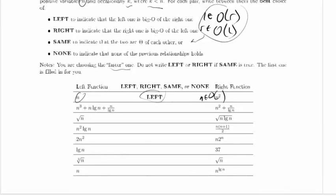Now, n cubed plus n log n plus n over log n - well, n cubed dominates both of these terms, those are just low order terms. So this is equivalent asymptotically to just theta n cubed, and over here this term drops out, this is n squared. n squared is faster, so this will be RIGHT.